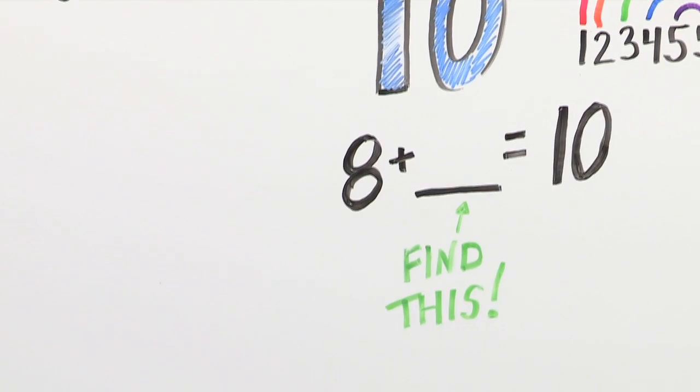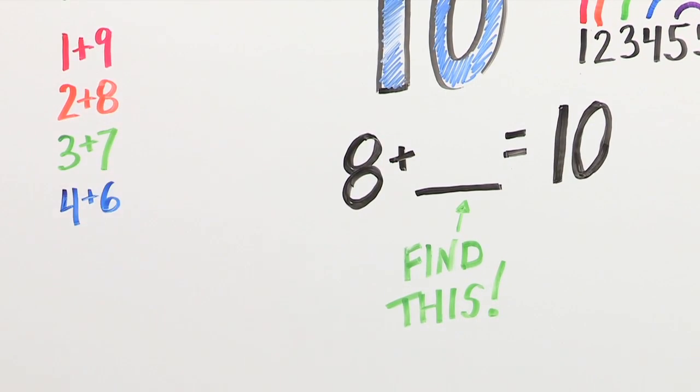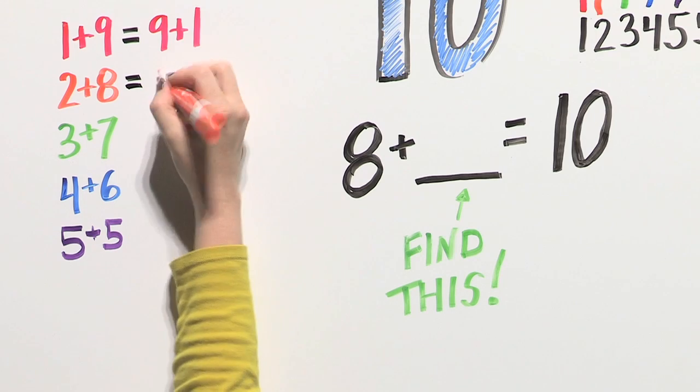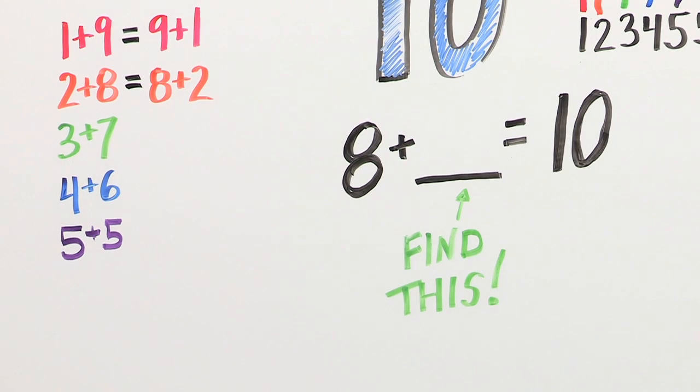Don't forget, you can switch the order of the number partners. 1 plus 9 equals 9 plus 1. 2 plus 8 equals 8 plus 2.